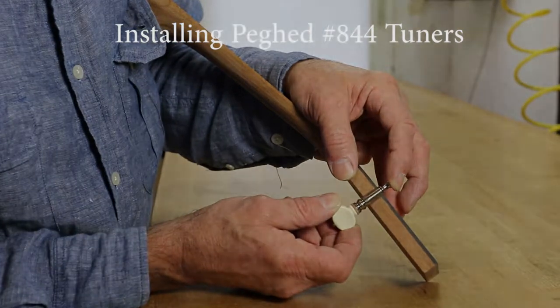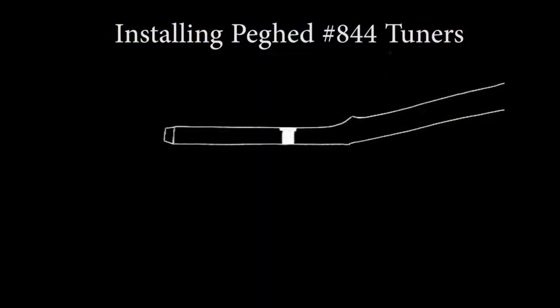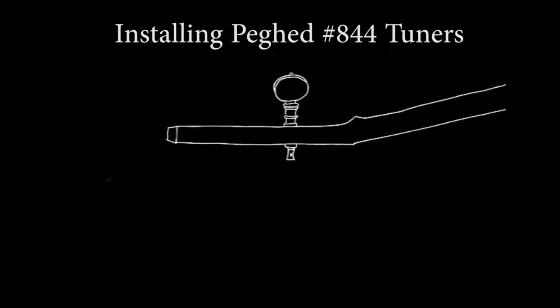The steps I take to install these peghead tuners is to start by drilling a shallow relief hole on the backside. Then I'll through drill with a smaller bit, ream the hole, and install the peg.